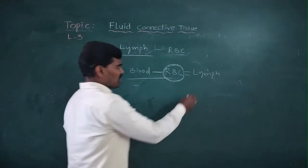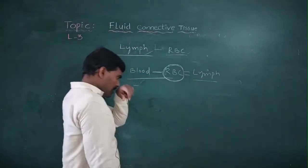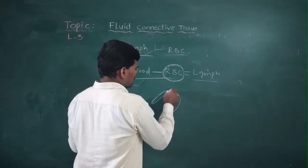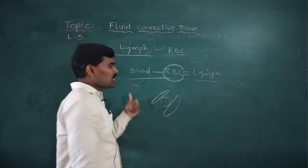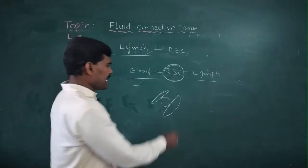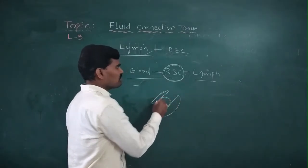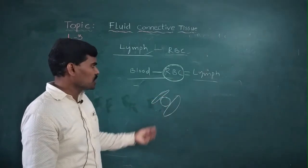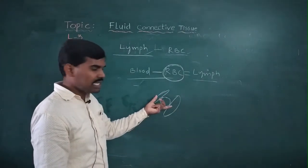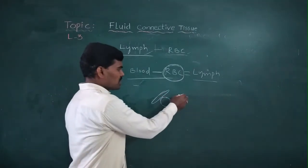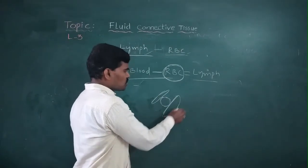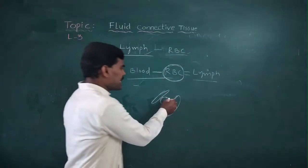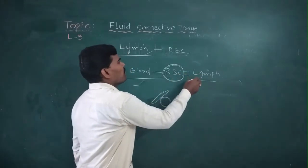Lymph is formed in the interspaces — that is, in between the tissues and cells. In these interspaces, a fluid-like matrix is formed under the pressure of blood vessels.